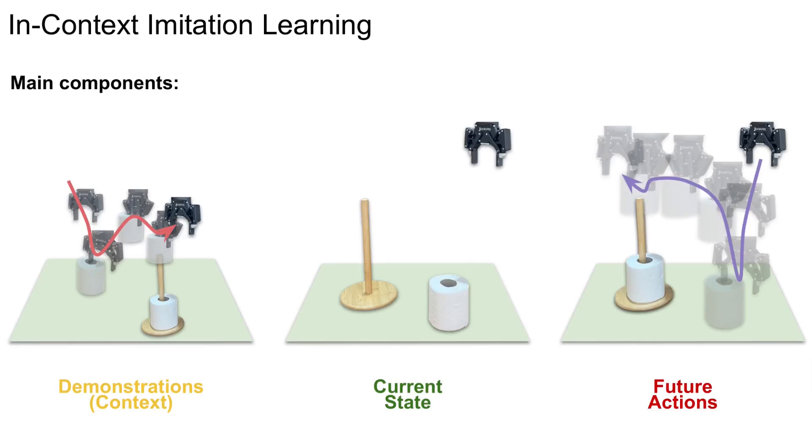In-context imitation learning has three main components that need to be seamlessly integrated to tackle this problem efficiently. These components are the provided demonstrations, current state of the environment, and future robot actions.